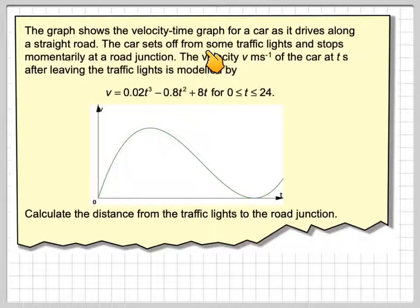The graph shows the velocity-time graph for a car as it travels along a straight road. The car sets off from some traffic lights and stops momentarily at the road junction. The velocity v metres per second of the car at t seconds after leaving the traffic lights is modelled by v equals 0.02t cubed minus 0.8t squared plus 8t, for t between 0 and 24. Calculate the distance from the traffic lights to the road junction.